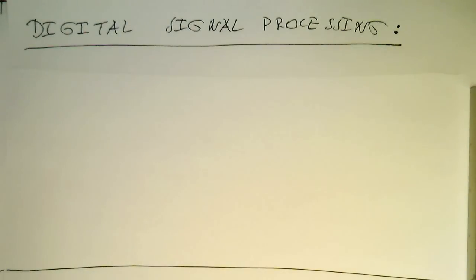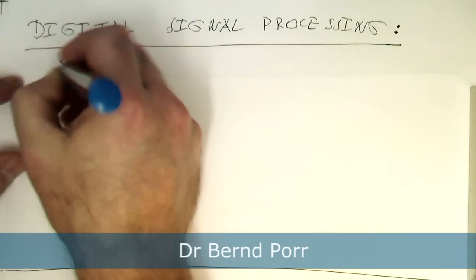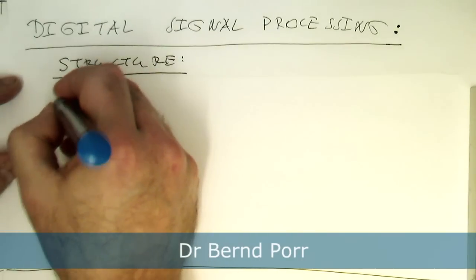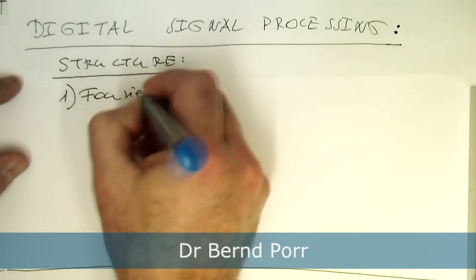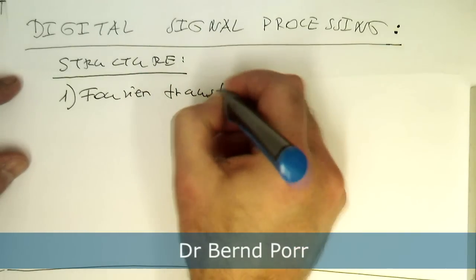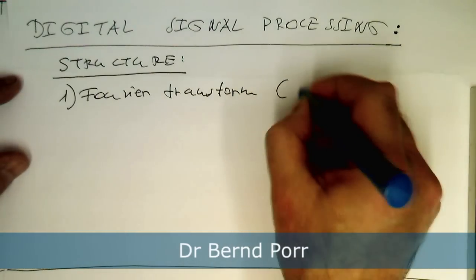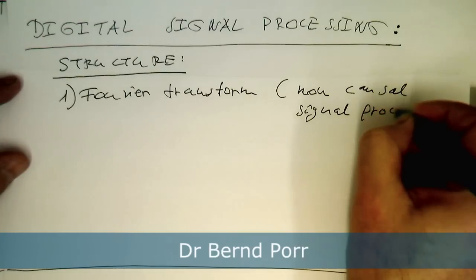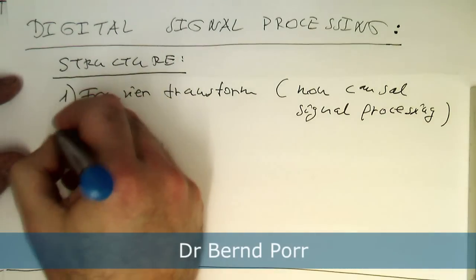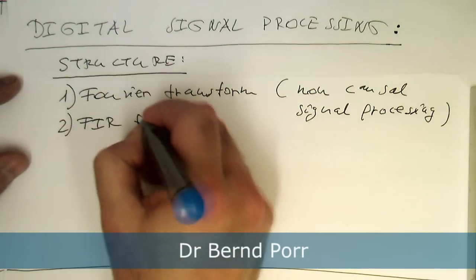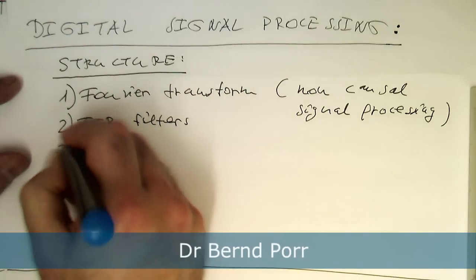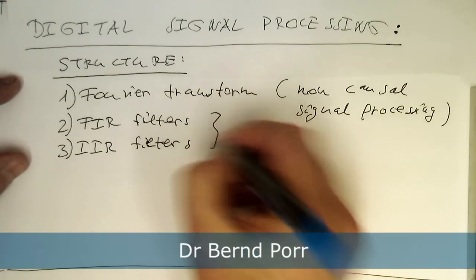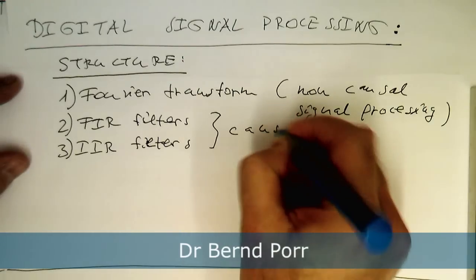Welcome to Digital Signal Processing. In this class we have the following structure: in the first part we have the Fourier transform, which performs non-causal signal processing. Then in the second part we have FIR filters. Then the third one we have IIR filters, and they are performing causal signal processing.